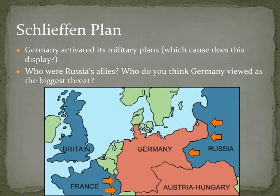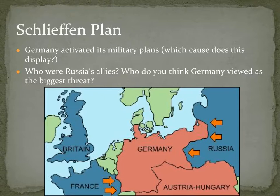Who did Germany view as the biggest threat? In this time period, they viewed Russia as the biggest threat because Russia was this huge empire. Even though Russia was behind in military technology, it still had the largest military in Europe — the largest number of men. Germany felt Russia was going to be the big issue once war began.